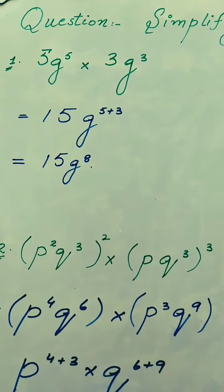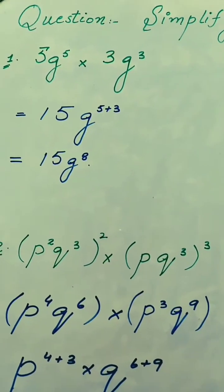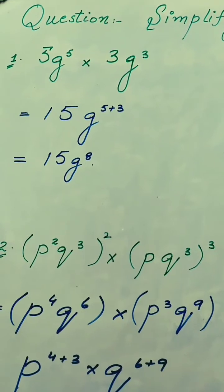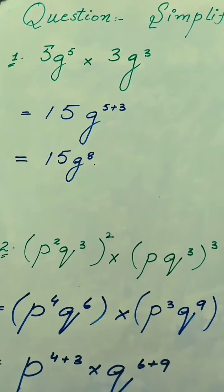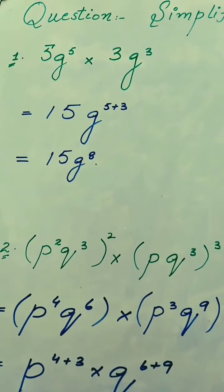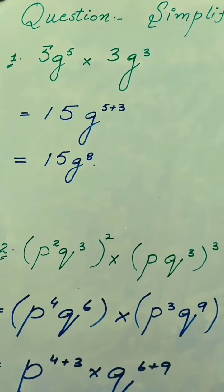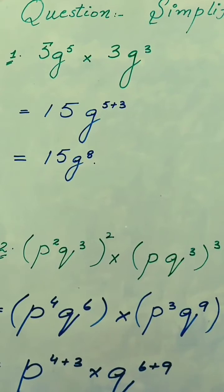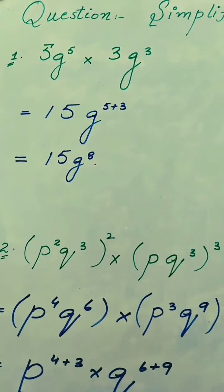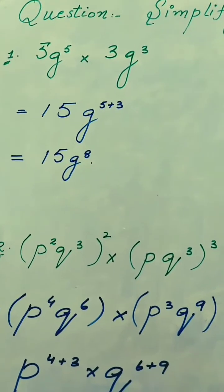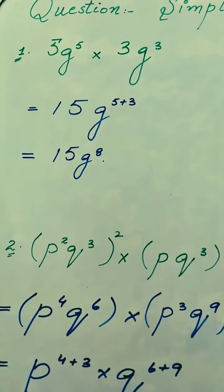Hello and welcome. Today we will look at some simplification questions. The first question is 5g raised to the power 5 multiplied by 3g raised to the power 3.